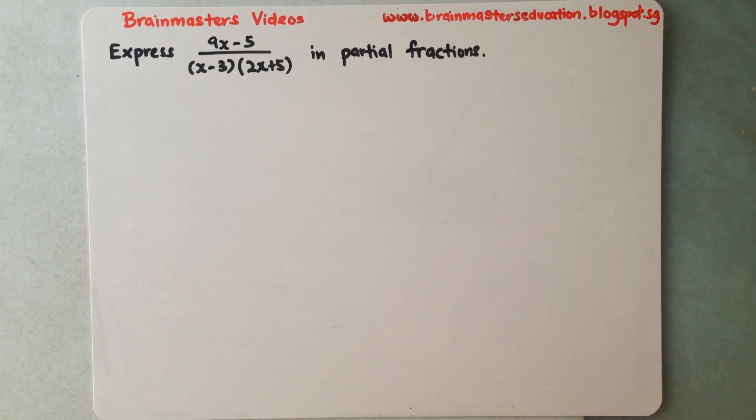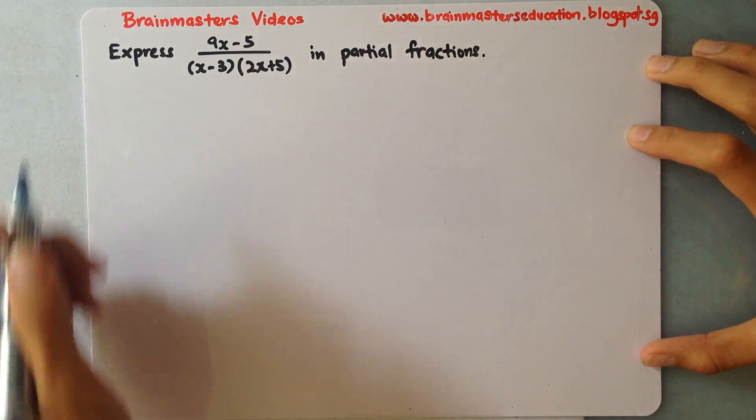Welcome to Brainbusters Videos. Previously I did on partial fraction, on identifying the different types. Today I will be doing on partial fraction type one. This is a question: express (9x-5) over (x-3)(2x+5) in partial fractions.